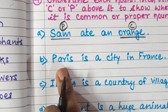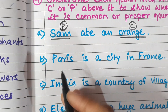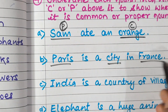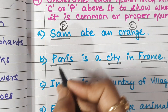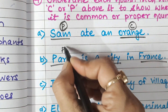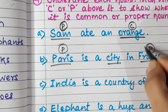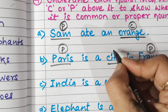Paris is a city in France. Paris, city and France are all three noun words. Paris is a proper noun, France is a proper noun, and city is a common noun.